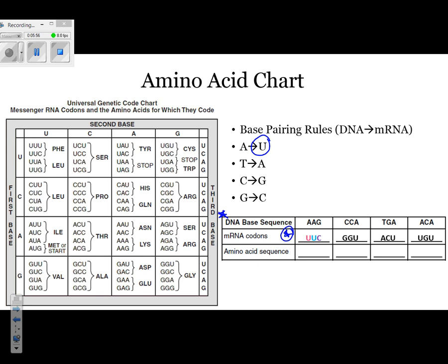For our next section, we need to learn how to use the amino acid genetic code chart. There's a section called first base, second base, and third base, each highlighted in a different color. We have our first base, which is U. After that, I need to find the second base, which is also U — but notice we're referring to a different section of the chart. We find where those two areas overlap, highlighted in yellow. From that, U, U, C goes with PHE.